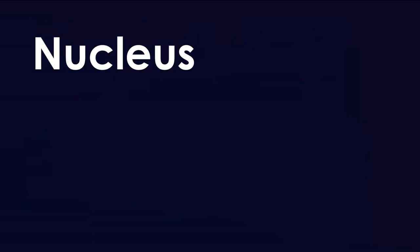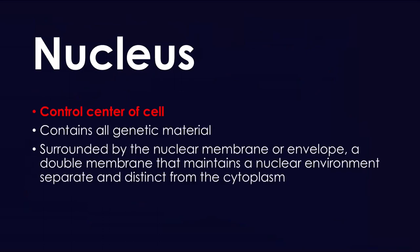Let's talk about the nucleus, the control center of the cell. It contains all the genetic material, and it's surrounded by a nuclear membrane or nuclear envelope, which is a double membrane that maintains a nuclear environment separate from the cytoplasm. The reason for the double membrane is to protect the DNA from damaging things — if damaging things come in and affect DNA, you can have mutations.